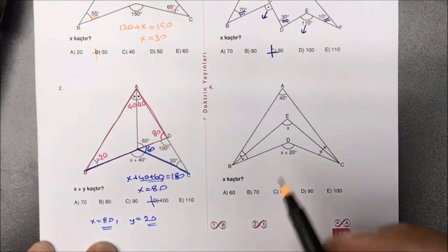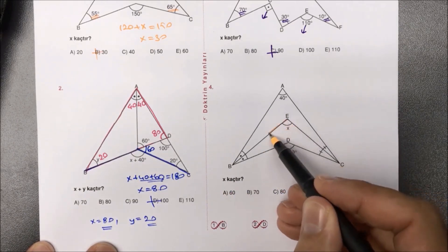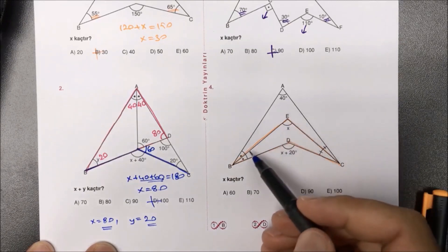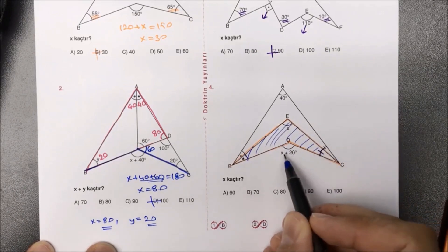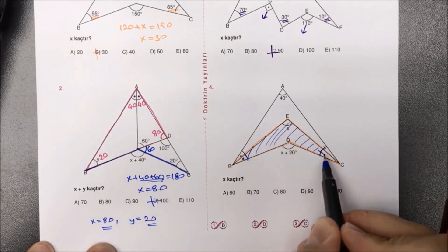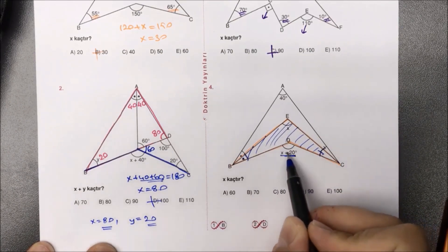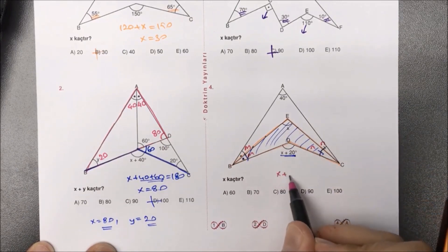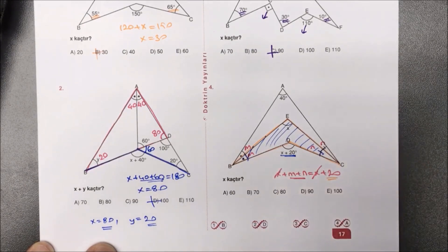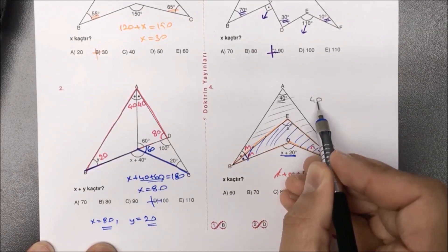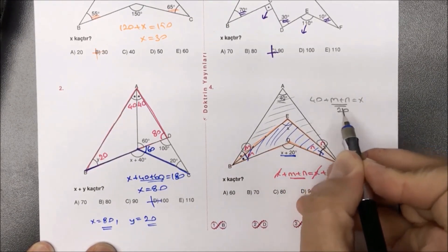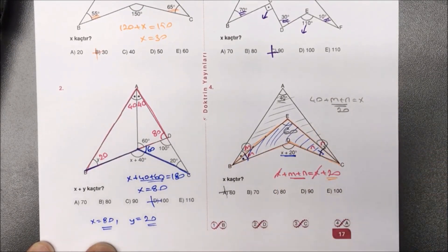Dördüncü sorumuza geldik: verilenlere göre X kaçtır diye sorulmuş. Alttaki boomerang'a bakalım: içeride X artı M artı N var, dışarıda X artı 20 var. X'ler karşılıklı olarak giderse M artı N buradan 20 olarak bulunur. Üstteki boomerang'a bakalım: 40 var, M var ve N var; yani 40 artı M artı N bize X'i verecek. M ile N'nin toplamını 20 bulmuştuk; 40 artı 20'den aradığımız X yanıtı 60 olarak bulunmuş olur.